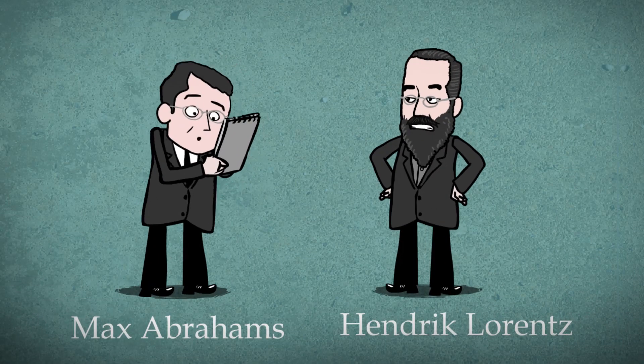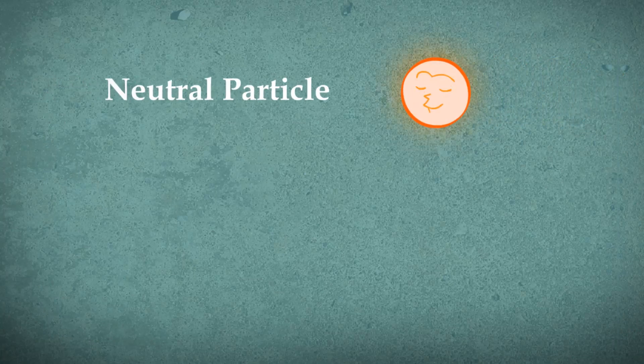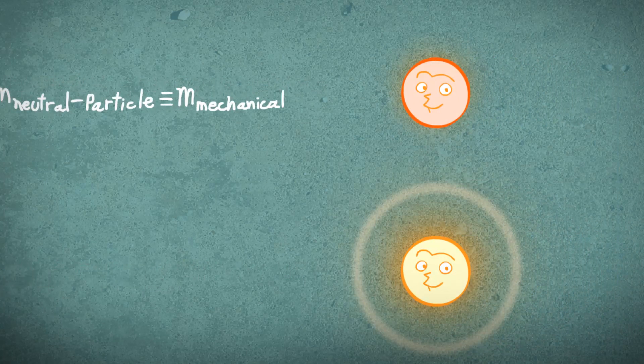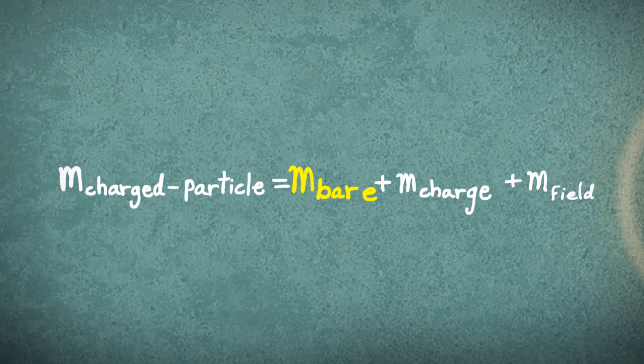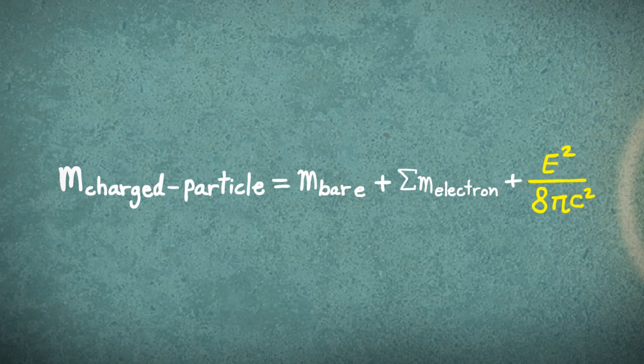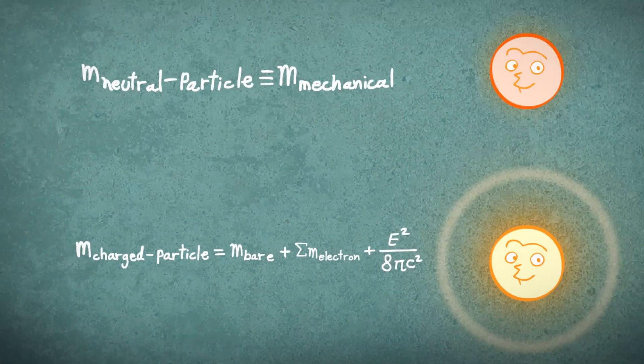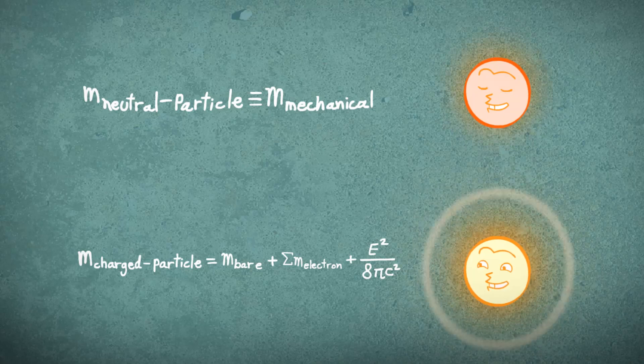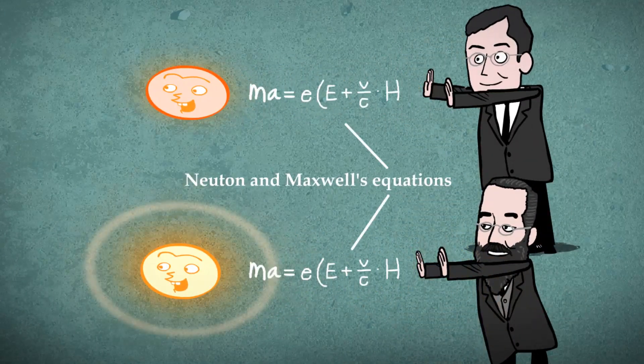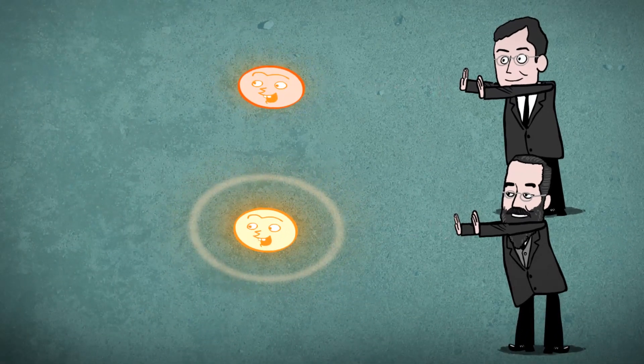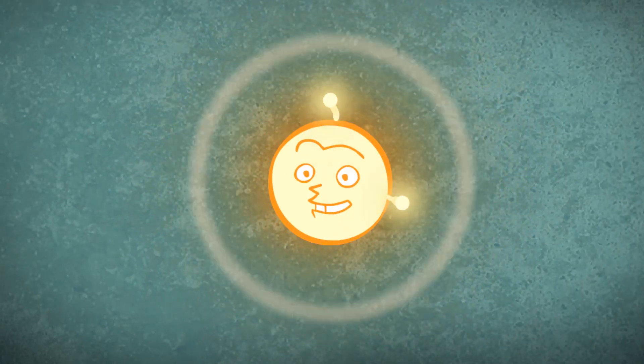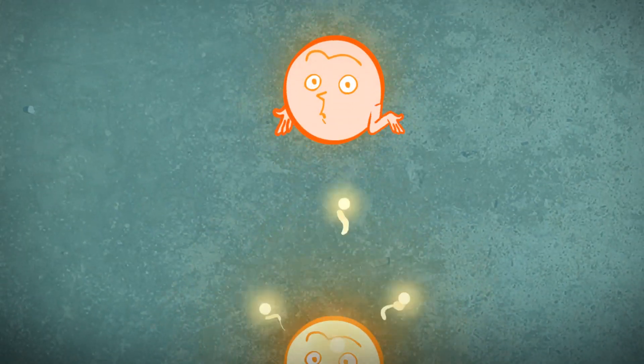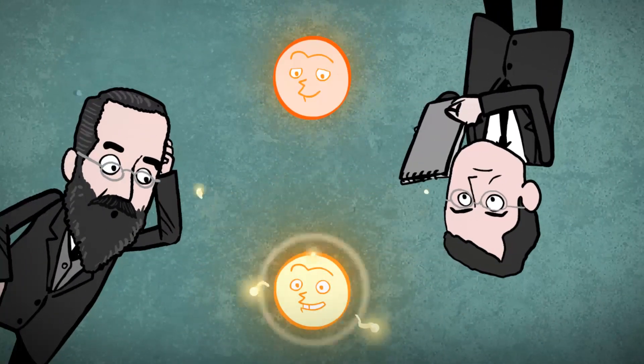Abraham and Lorentz noticed something weird. Let's take a neutral particle and a charged particle. The mass of a neutral particle is its mechanical mass, while the mass of a charged particle is the bare mass of the particle plus the mass of the added electrical charge plus the mass of the electromagnetic field created. When accelerating a neutral particle and a charged particle with the exact same total mass using the same force for the same distance, both particles will gain the same kinetic energy. But how could that be? An accelerated charged particle radiates energy that the neutral particle does not. This additional energy has to come from somewhere.